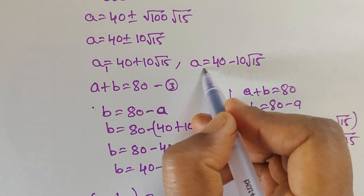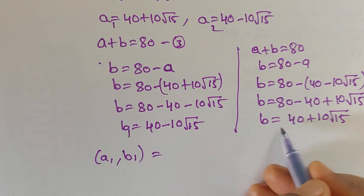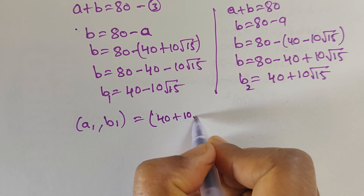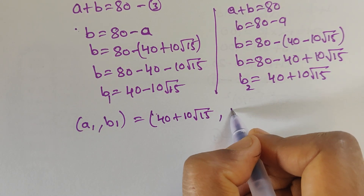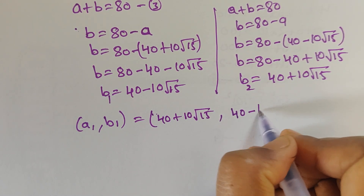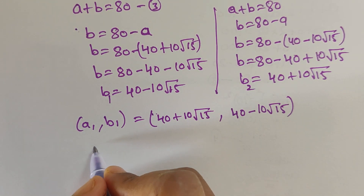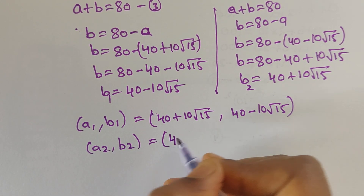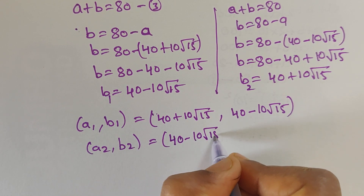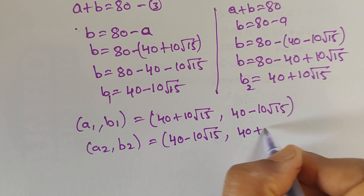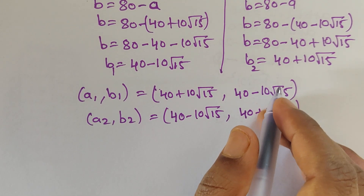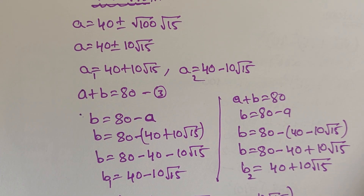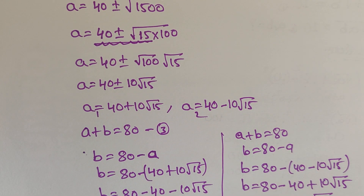So A1 equals 40 plus 10 square root of 15, and B1 equals 40 minus 10 square root of 15. A2 equals 40 minus 10 square root of 15, and B2 equals 40 plus 10 square root of 15. We got two solutions. Thank you for watching — please subscribe for more videos. See you in the next video!